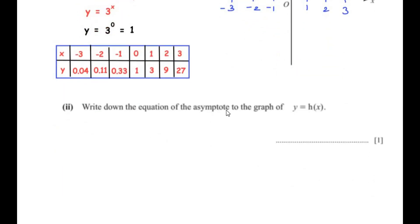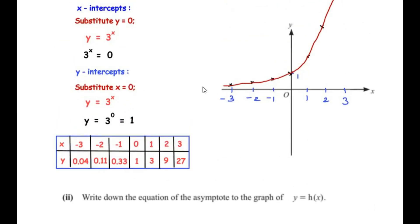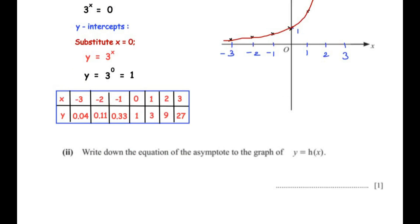Write down the equation of the asymptote to y equals h(x). An asymptote is a line which tries to approach the graph infinitely but never crosses it. The graph approaches the x-axis but never cuts it, so the x-axis is the asymptote. The equation of the x-axis is y equals 0.